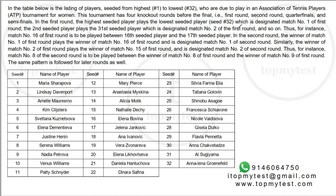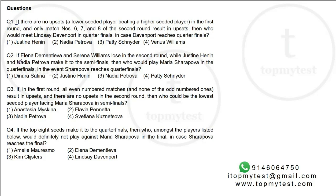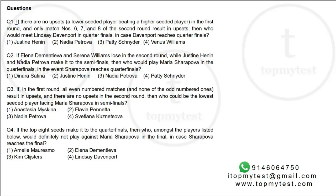This has a reasonable amount of data, and each question is a case-by-case basis, as is the case with most games and tournaments problems. The table lists players seeded from highest to lowest, who are due to play in the ATP tournament for women. The tournament has four knockout rounds before the final — that is, first round, second round, quarterfinal, semifinals, and then the final. So there are five rounds, giving 2 to the power 5 equals 32 players.